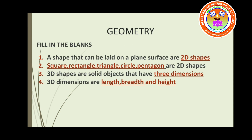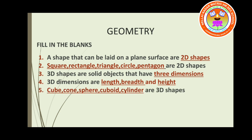So, 3D dimensions are length, breadth, and height. Fifth fill-up: what are the examples for 3D shapes? Cube, cone, sphere, cuboid, and cylinder. So these are the examples for 3D shapes — cube, cone, sphere, cuboid, and cylinder are all 3D shapes.